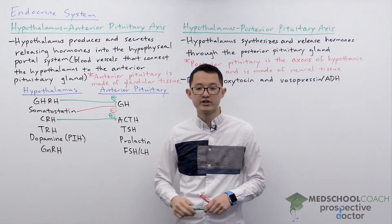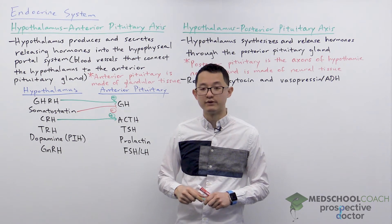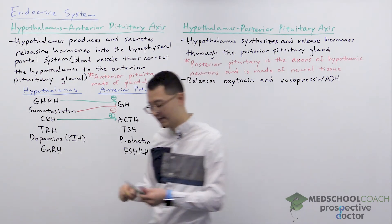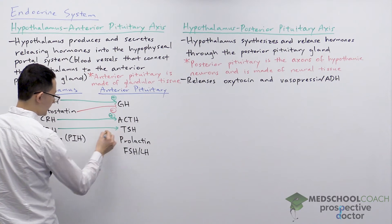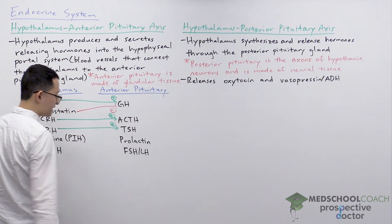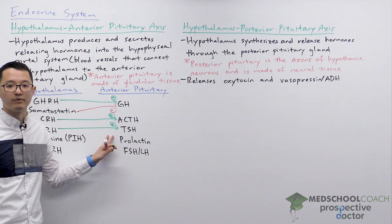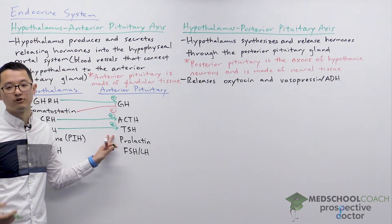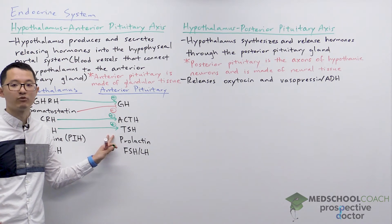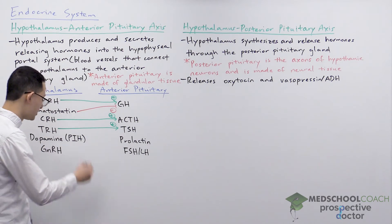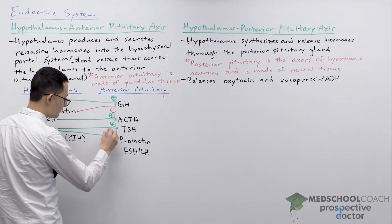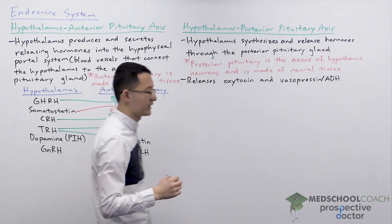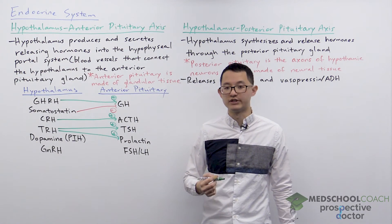We then have TRH — thyrotropin releasing hormone. This has two effects: it stimulates the anterior pituitary gland to release thyroid stimulating hormone (TSH), which acts on the thyroid gland to release the thyroid hormones. TRH also has a partial effect of stimulating the release of prolactin from the anterior pituitary gland.